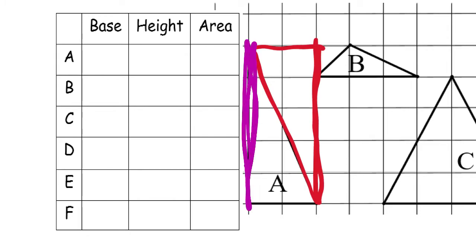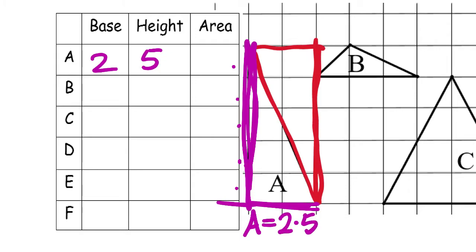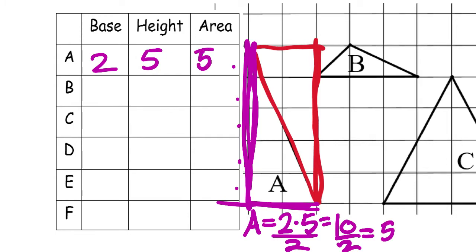So as long as I could find the length and width of this rectangle, I could find the area of the triangle. So I'd say — what is the length of this triangle? That's one, two, three, four, five — I got five boxes there. I'll say the height is five. And then the base — how long is the base? It's two. The area for triangle A would be base two times the height of five, which is 10. But we still need to cut that in half, so don't forget to divide by two. 10 divided by two is five square units.